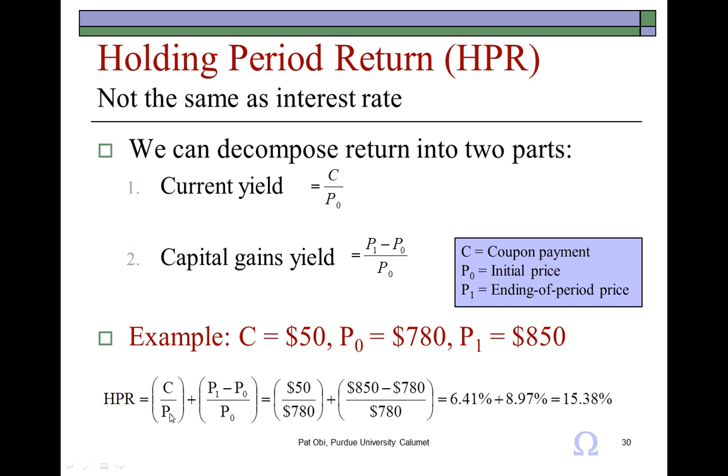So, if it is a real estate investment, then this would be the annual income, rental income that you may have received, and this is your capital gain. Both of which expressed as the percent of the price you paid to make that real estate investment will provide you with your holding period yield. It's a short segment of this presentation, and that's it.